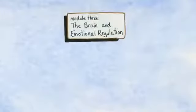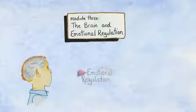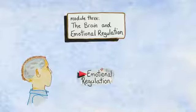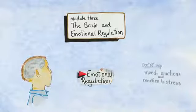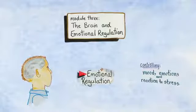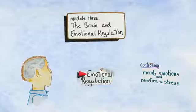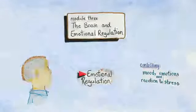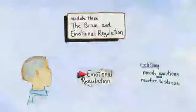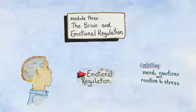Our objective for Module 3 is to explore the brain further by discussing emotional regulation, which is our ability to control, either consciously or automatically, our emotions and moods, and how this system is impacted by prenatal alcohol exposure.